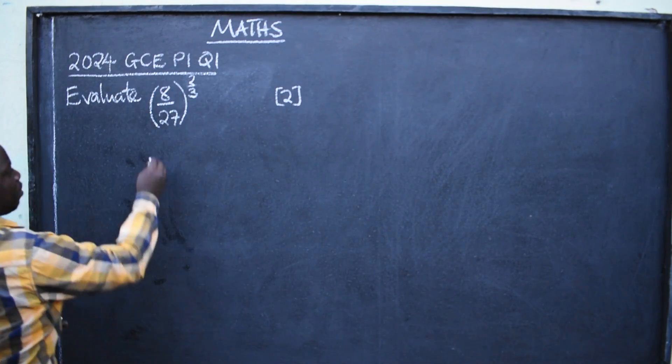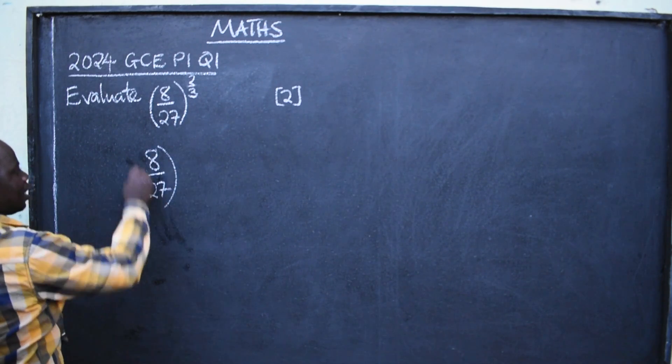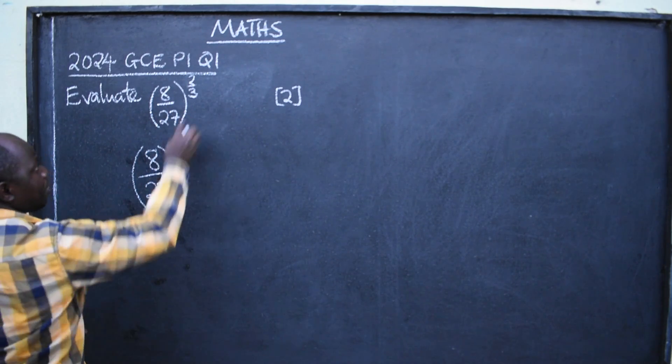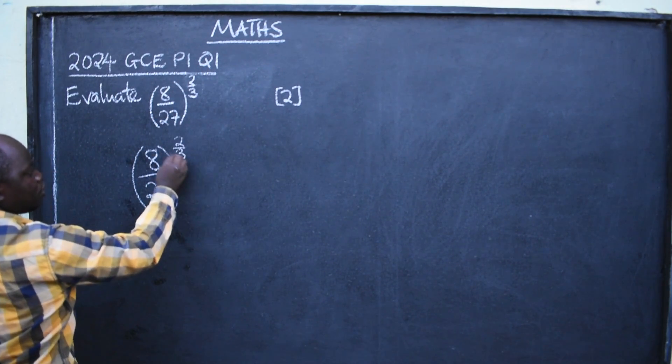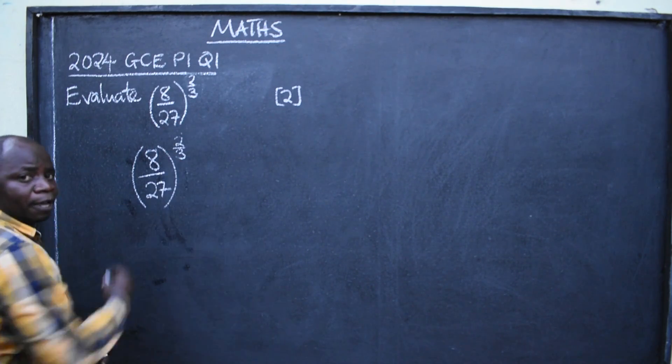This is where the question was coming from. Well, how do you go about it? You will be able to copy the question the way it is. 8 over 27, like this, raised. This is power, okay? Now, when you are given the whole fraction here, it is power. 2 over 3. So you have to write it here. Not here. It is power.